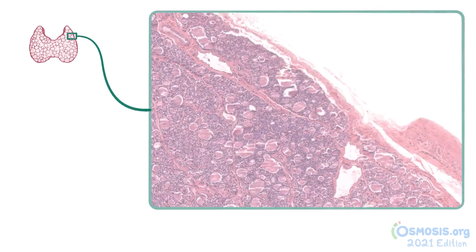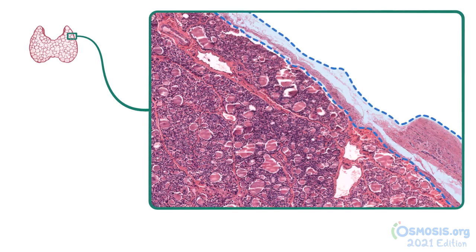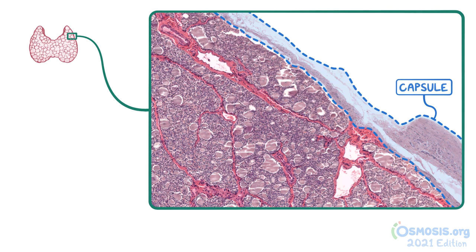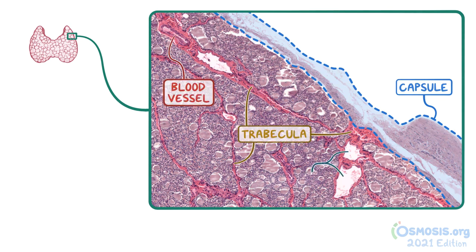The thyroid gland has a thin capsule of connective tissue surrounding it, which can be seen in this low-power image, mostly on the right side. The connective tissue extends inward along with blood vessels, lymphatics, and nerves, although there aren't any nerves clearly visible in this image.